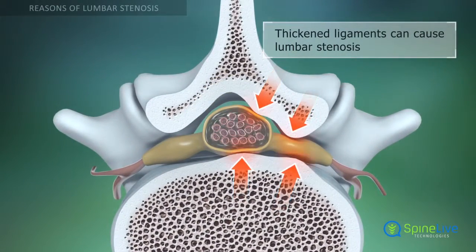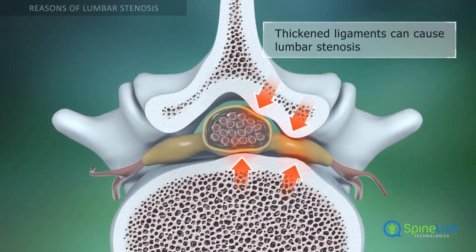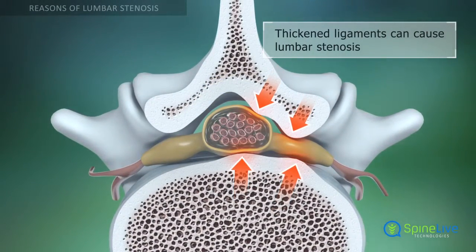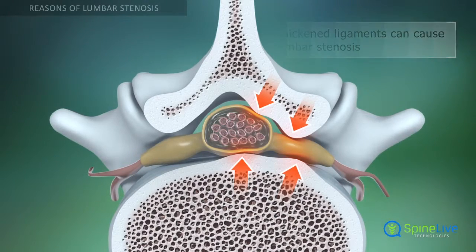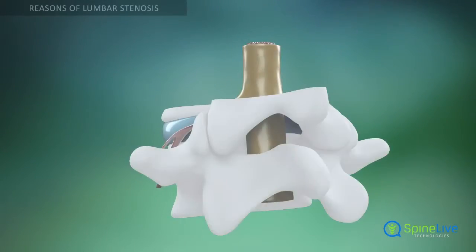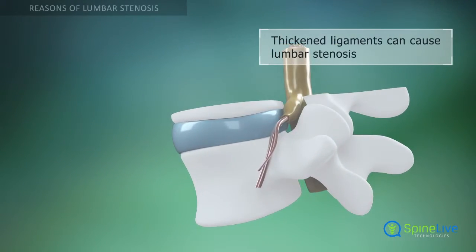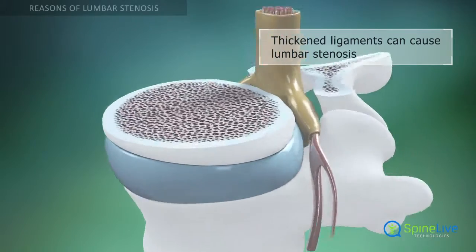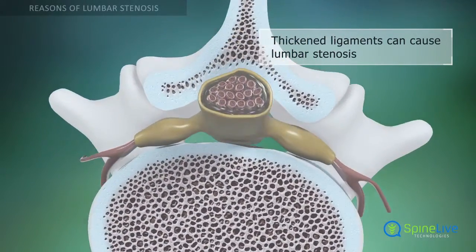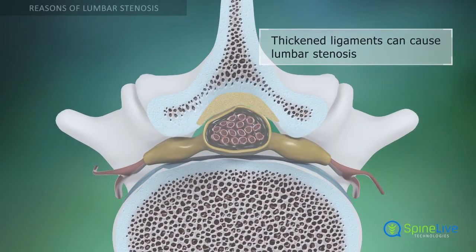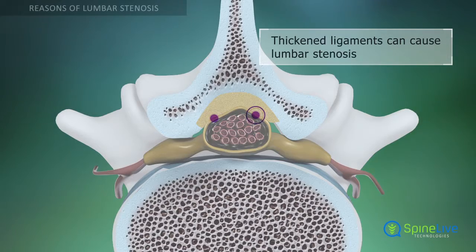Overgrowth of vertebral bone tissue can put pressure on the spinal cord or nerve roots in the lumbar region of the spine. With age, ligaments that bind the spine together become thickened and stiff; these ligaments can bulge into the spinal canal and compress the spinal cord.